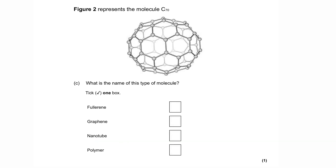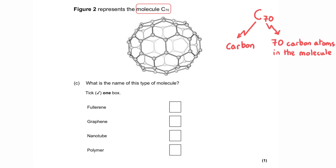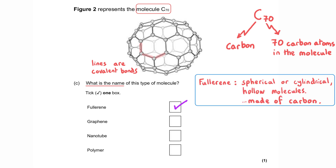Figure 2 represents the molecule C70 — capital C meaning the element carbon, and 70 referring to the 70 carbon atoms making up the molecule. The grey circles are the carbon atoms connected by lines representing covalent bonds. We're asked what type of molecule this is, with four options. The correct answer is option one: fullerene. C70 is a type of fullerene.